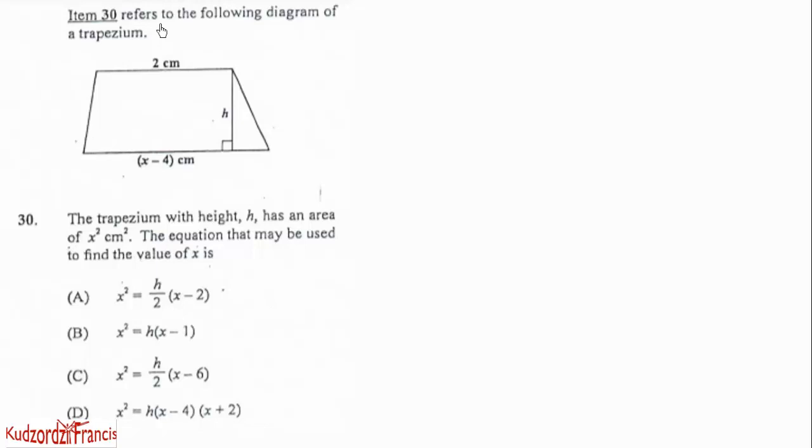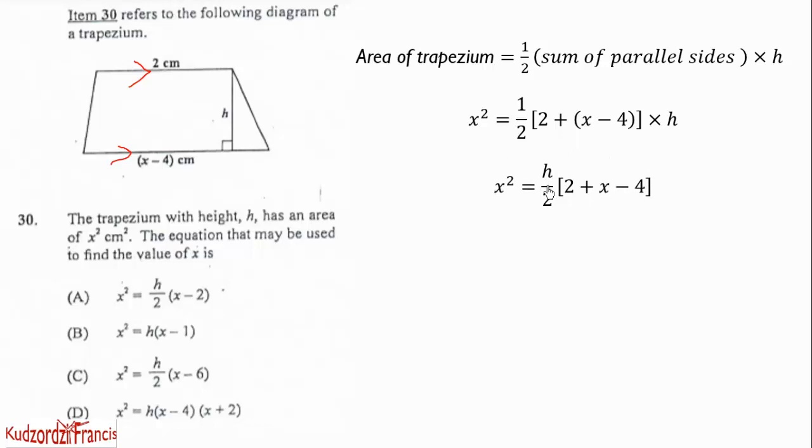Item 30 refers to the following diagram of a trapezium. So this is the trapezium. The bases are 2 centimeters by x minus 4 centimeters. We have the height to be h. So we know that the area of a trapezium is given by half times sum of the parallel sides. So these are the parallel sides. We sum them, then half it, and multiply by the perpendicular height. So that will be equal to, substitute this inside here, we got the other parallel side. Now we can, we were told that the area of the trapezium is x squared. So that is our equation. We got that.